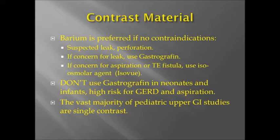Barium is the preferred contrast agent for use in this exam. If aspiration is suspected, a water-soluble contrast such as Isovue should be used. Gastrografin can be used in older children with suspected GI leak or perforation. However, Gastrografin is contraindicated in neonates and infants due to the high risk of gastroesophageal reflux and aspiration in this age group. Of note, the vast majority of pediatric upper GI fluoroscopic exams are single contrast.